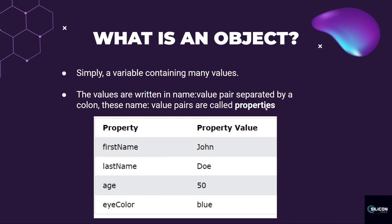So, let's say name and value pairs are the properties. For example: first name is John, last name is Doe, age is 50, eye color is blue. Here we define a const Person object with these properties.